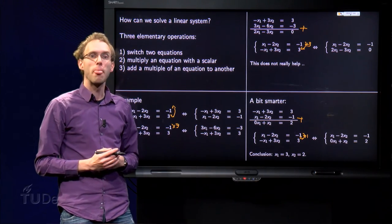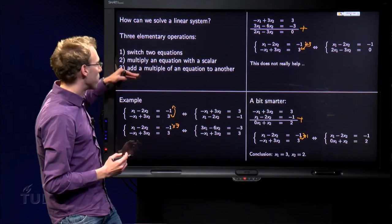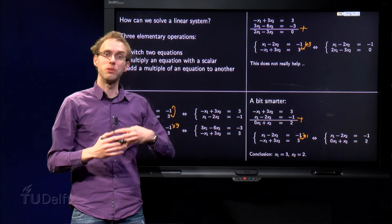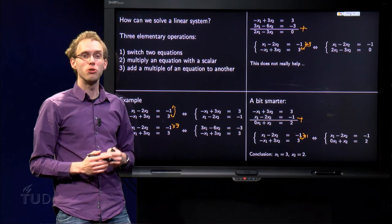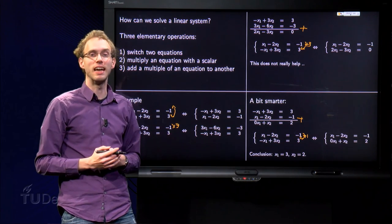So now we have found the solution of our system. Using these three operations, you change the linear system but keep the same solution set. The idea is to simplify your linear system in order to be able to solve it in the end.